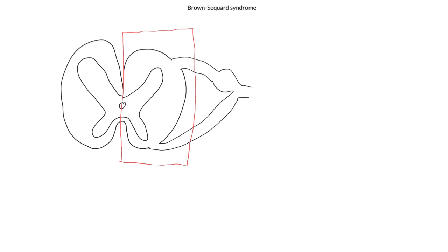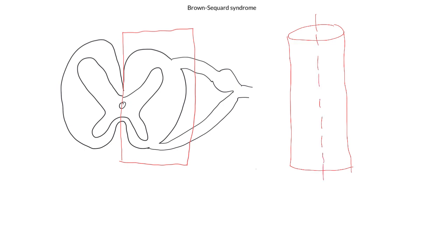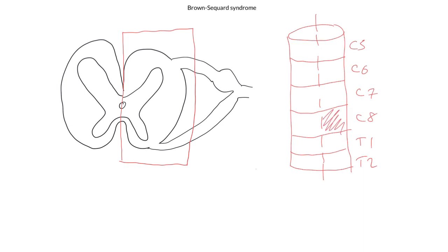If I wanted to show this diagrammatically in a longitudinal view, I could draw a cylinder with a midline and a number of cord segments — C5, C6, C7, C8, T1, and T2. Let's say that our lesion is affecting the C8 spinal cord segment on one side. So we have a spinal cord hemisection where the left half of the C8 spinal cord segment has been destroyed.